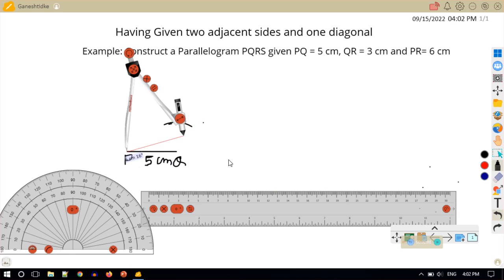Now, with P as the center and radius is equal to 6 centimeter, I will draw an arc intersecting the previous arc at point R. So this point of intersection of these two arcs, this point is my point R.